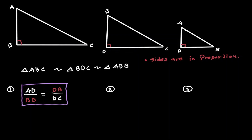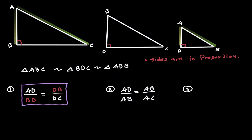For the second scenario, let's compare the big right triangle with the smallest right triangle. Notice that AD is going to be in proportion with AB, and AB is going to be in proportion with AC. Notice that here we have another geometric mean, because the expression on the denominator in the first fraction is equal to the expression in the numerator in the second fraction. This is an important result we will use when working with similar right triangles.